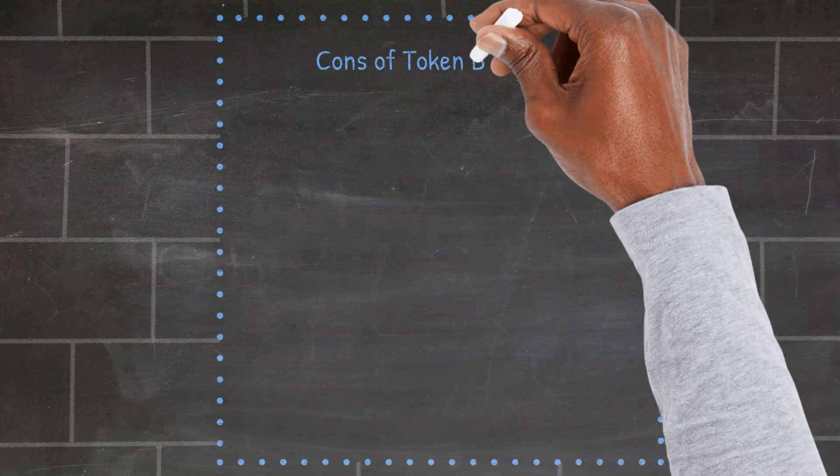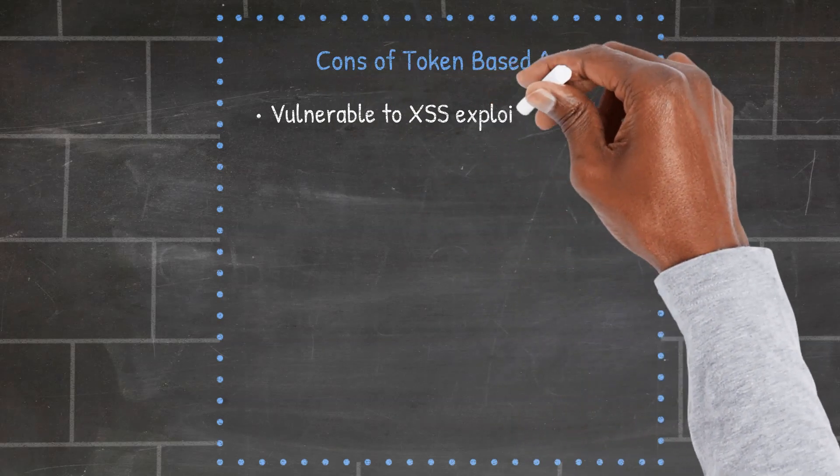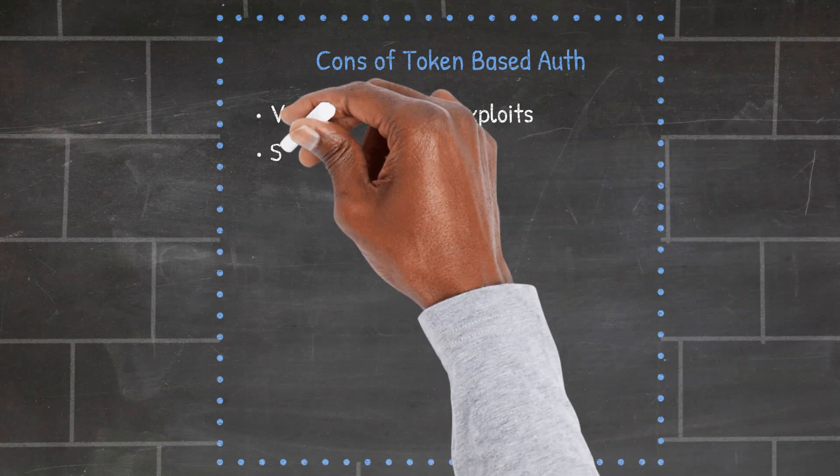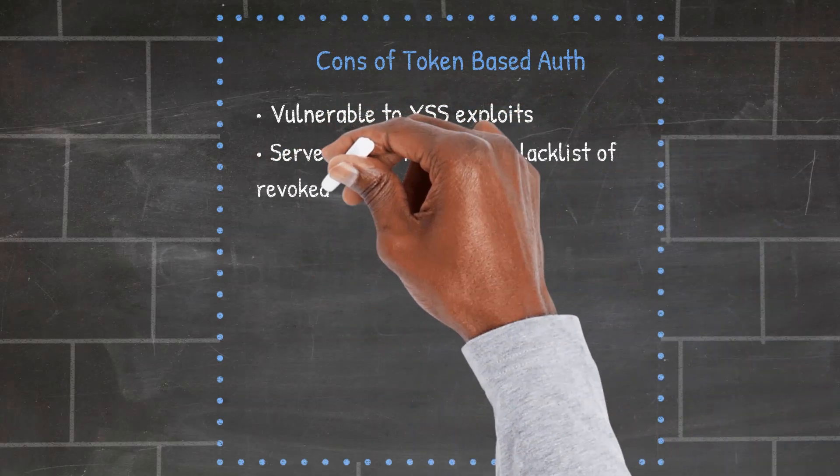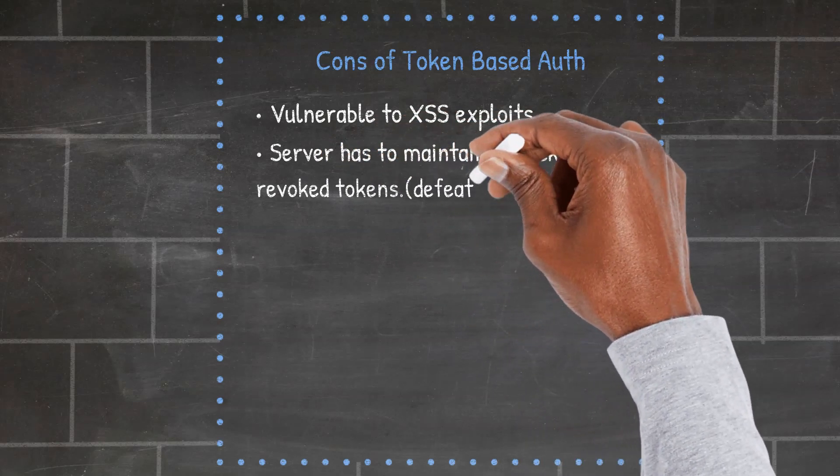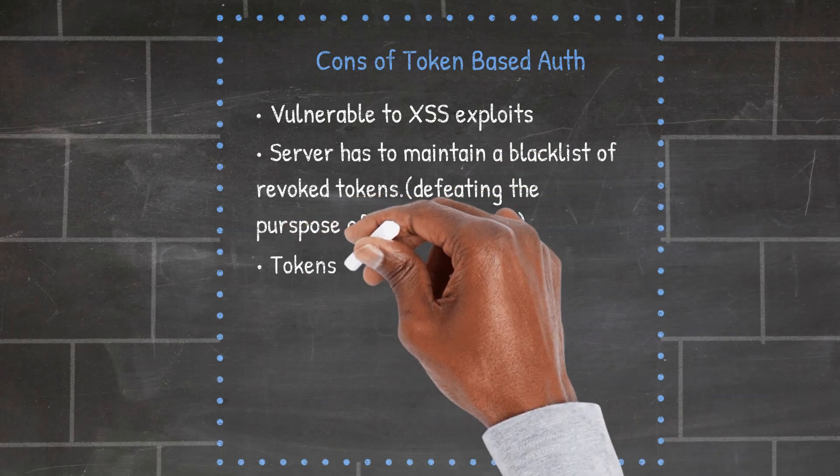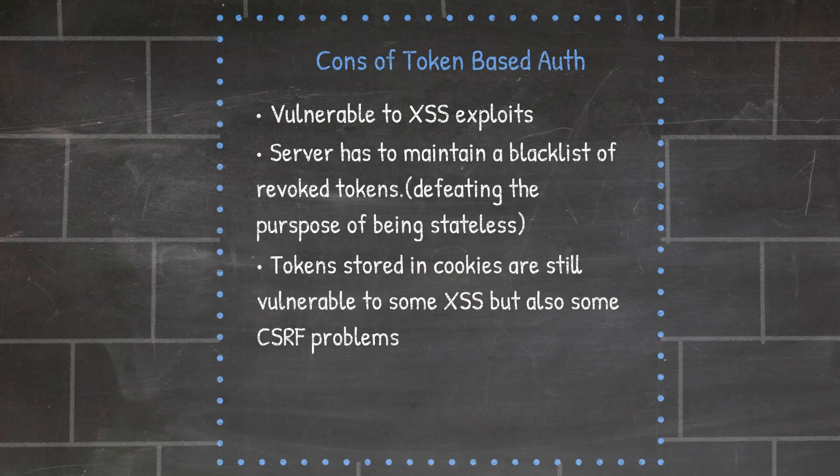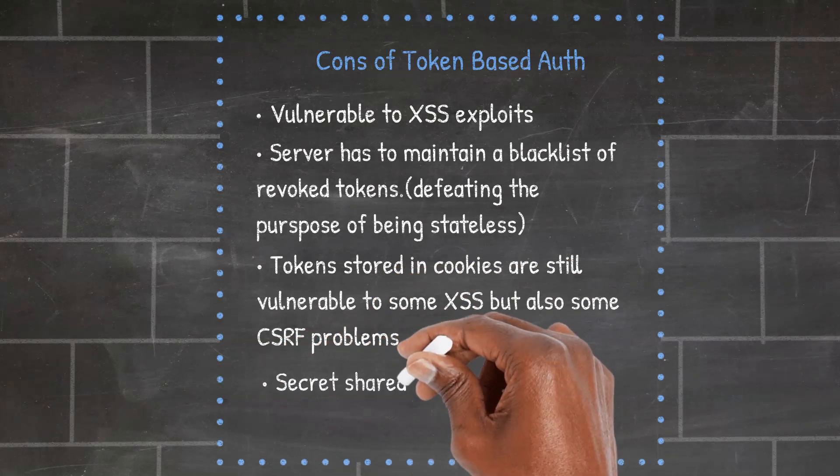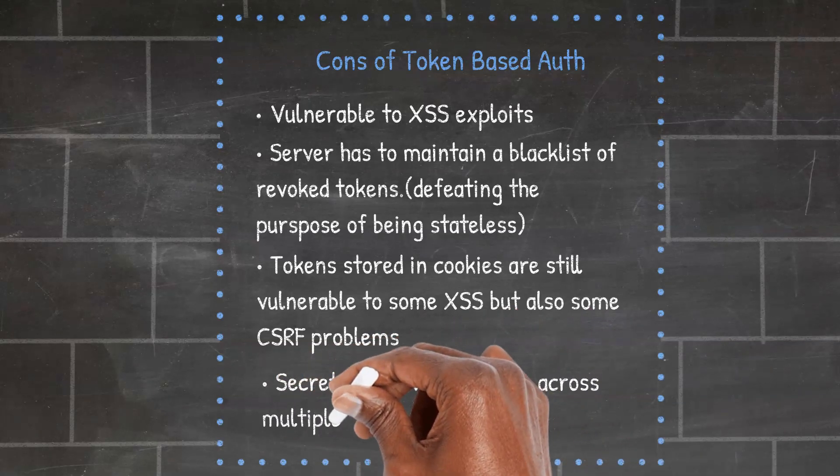The cons of using JWTs: Tokens stored on the client storage, especially on local storage with sensitive user information, are vulnerable to XSS attacks, that is the cross-site scripting attacks. The server still has to maintain a blacklist of revoked tokens. For example, when your web app gets hacked and you need to revoke your user sessions. Or when a user logs out and you need to revoke their sessions, etc. Thus defeating the purpose of being stateless. Tokens stored in cookies are also vulnerable to some XSS attacks, but also expose your applications to some CSRF problems. When scaling applications across multiple servers, then the secret is shared between the servers.